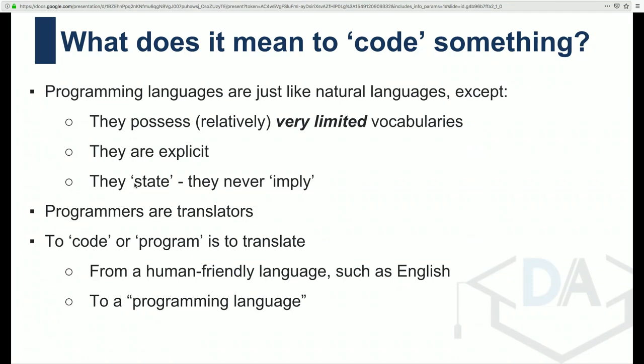Even if two people don't speak the exact same language, they might be able to figure out what the other is trying to communicate. Natural languages evolve over time, and we take that — as well as body language — for granted. Programming languages, on the other hand, are very explicit. There's no implication; everything is stated, not implied. There's no body language, no reading between the lines. As a programmer, you're taking in business requirements or some goal and outputting a clear translation of those requirements in code — in this very limited language where nothing is implied.